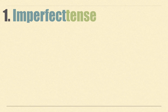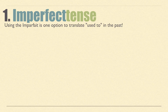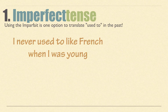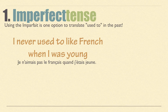First, the expression 'used to' in French: when it is related to a past event, we use le temps imparfait — the imperfect tense. It is one option to translate 'used to' in the past. An example: 'I never used to like French when I was young.' With l'imparfait we say: je n'aimais pas le français quand j'étais jeune. We use the imparfait here because it is related to a duration in the past.